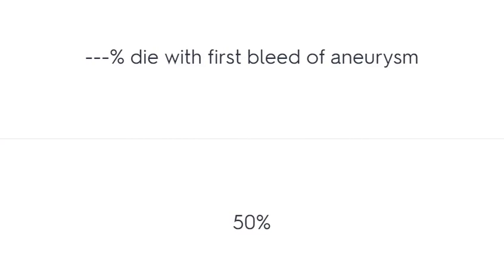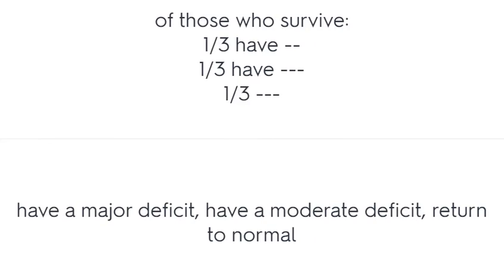50% of patients die with the first bleed of an aneurysm. Of those who survive, one-third have a major deficit, one-third have a moderate deficit, and one-third return to normal.